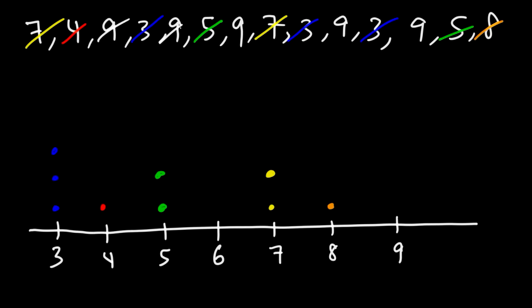And we have 1, 2, 3, 4, 5 nines. So we can clearly see that 9 is the mode in this example. But that's it. That's how you can make a dot plot given a list of numbers. Thank you.